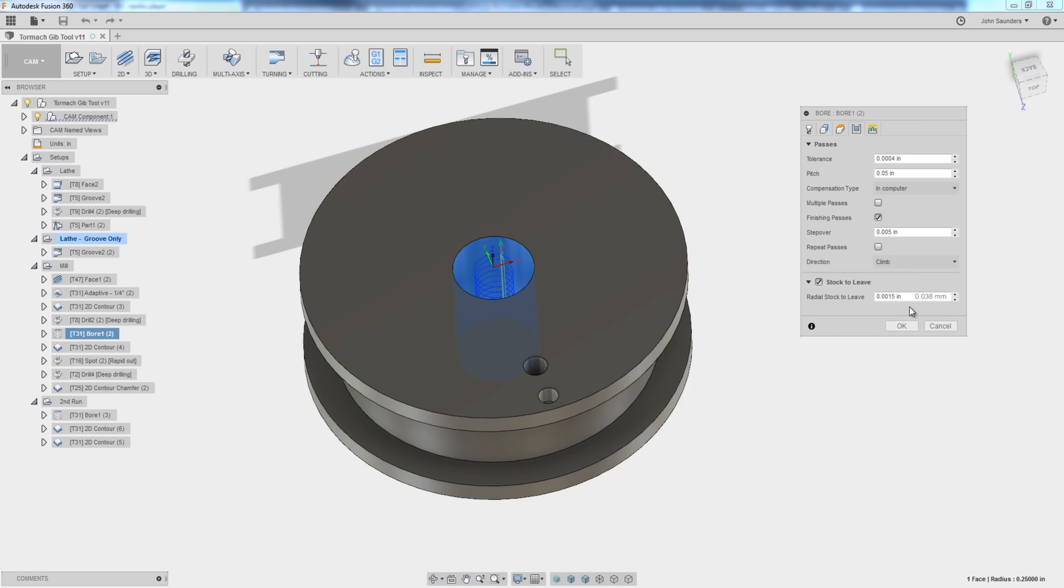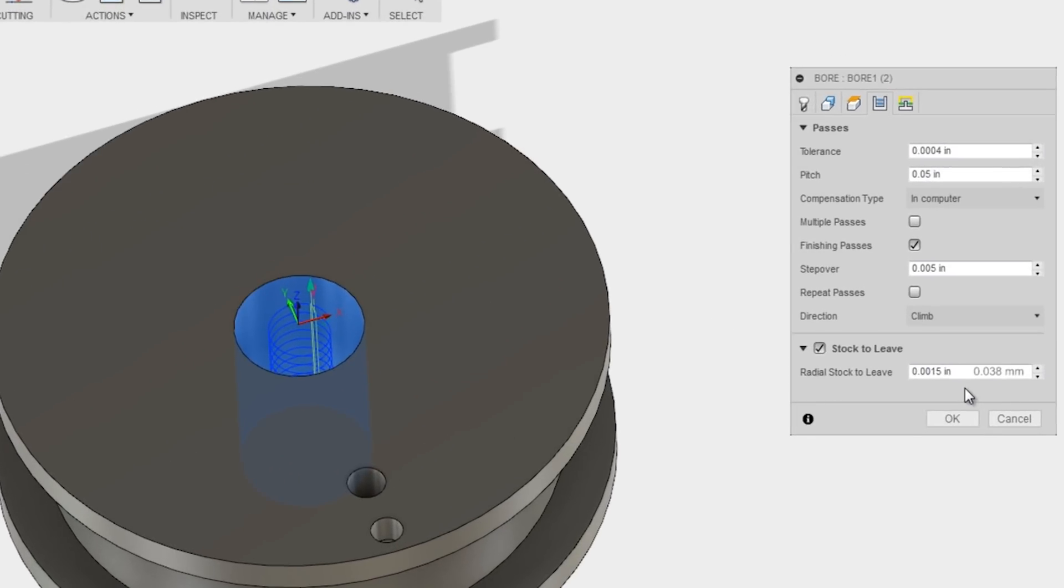And then we're using a bore to open that up. I am leaving about a thou and a half, which we'll walk out here in a second, just to make sure we get a good interference press fit.